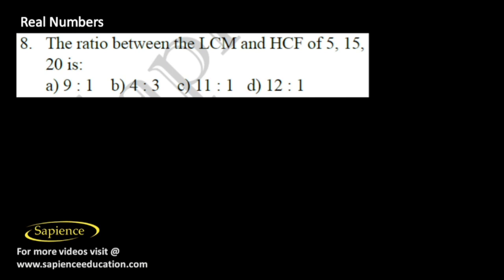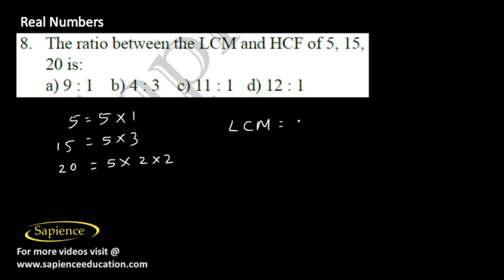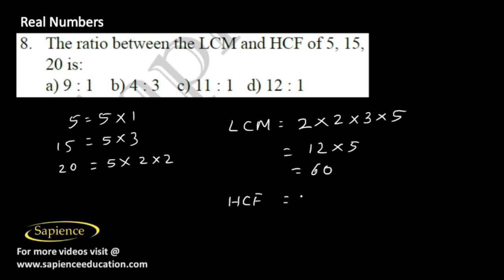Question 8: Find the ratio between the LCM and HCF of 5, 15, and 20. Factorizing: 5 is 5; 15 is 5 into 3; 20 is 5 into 2 into 2. LCM equals 2 squared into 3 into 5 which is 60. HCF is 5 (the only common factor). Ratio of LCM to HCF is 60 to 5, simplifying to 12 to 1. Option D is the correct answer.